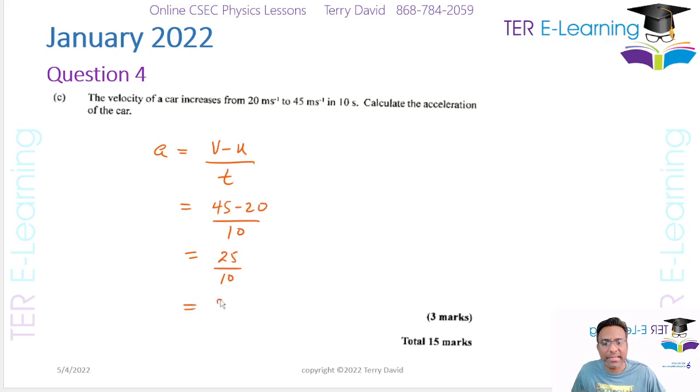So this is going to be 45 minus 20 is going to be 25 divided by 10. And this here is going to be 2.5 meters per second squared. Because this is acceleration and it's 2.5 meters per second squared. So this is my answer for question four.